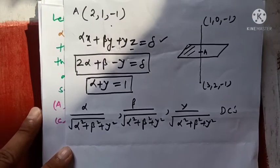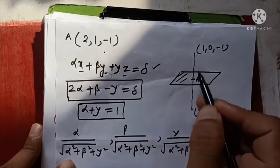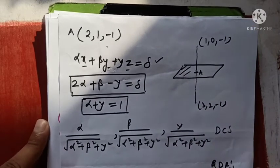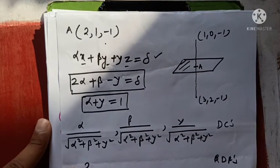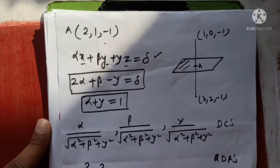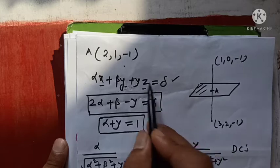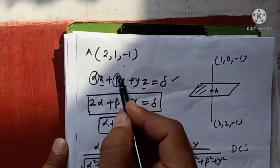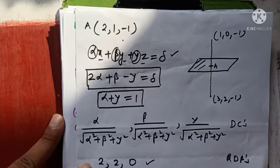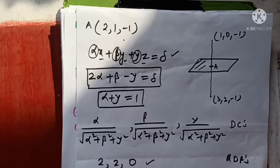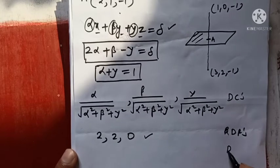To find direction cosines through the normal, we first find direction ratios. The normal passes through the two given points, so: 3-1 = 2, 2-0 = 2, -1-(-1) = 0. So direction ratios are (2, 2, 0). From the plane's equation, direction ratios are (alpha, beta, gamma). Now we compute direction cosines from these ratios.